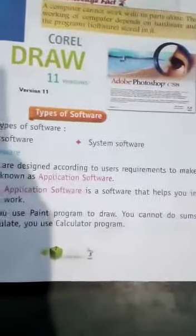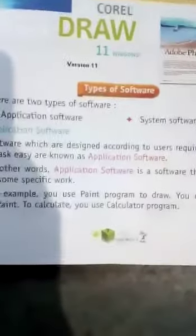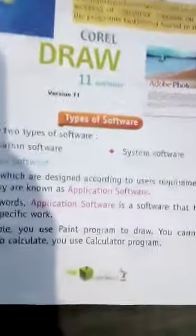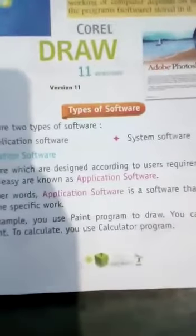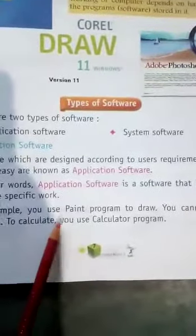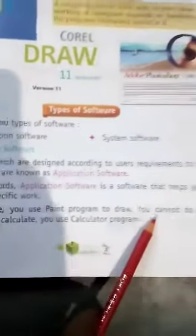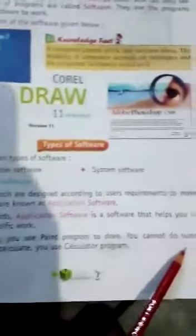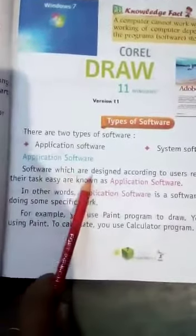Application software does some specific work inside the computer. For example, if you use the Paint program, you can only draw pictures. If you need to do calculations, then you have to use a calculator program. So each application software does only its specific task.